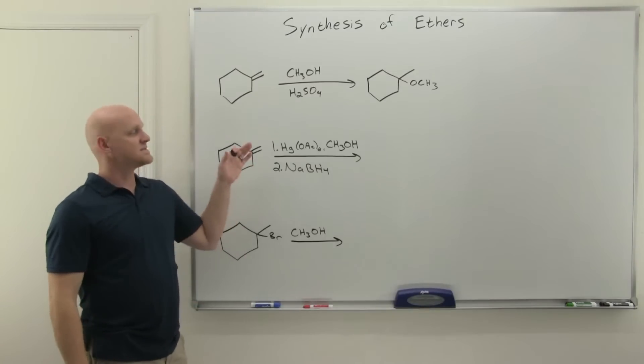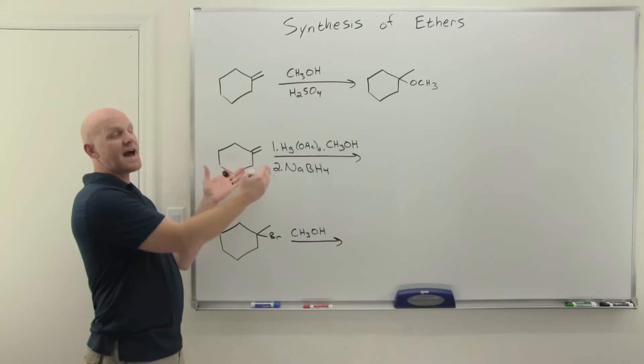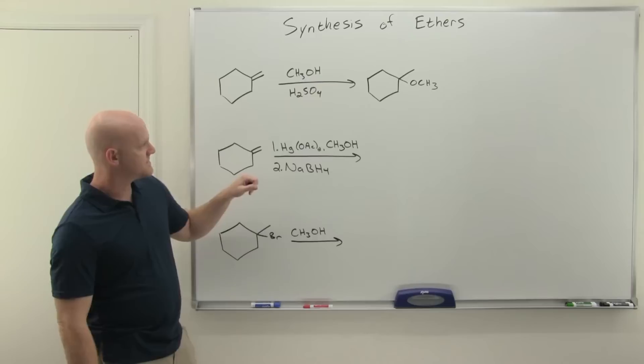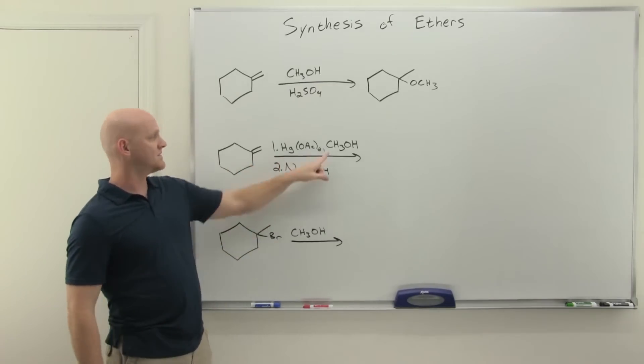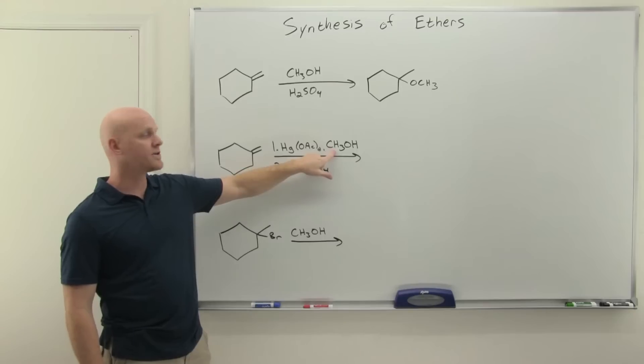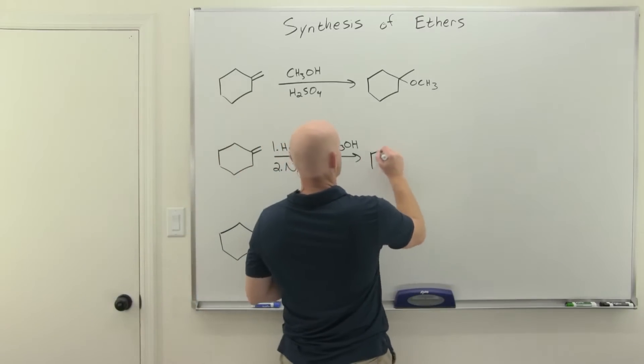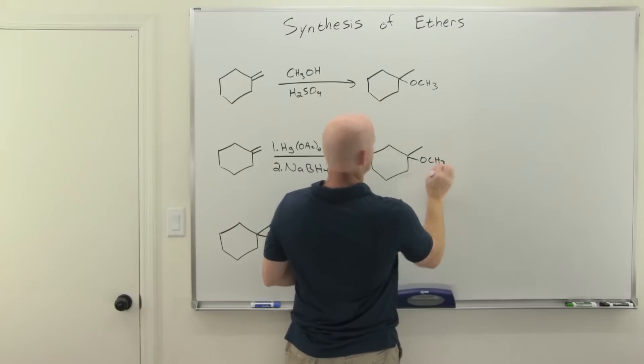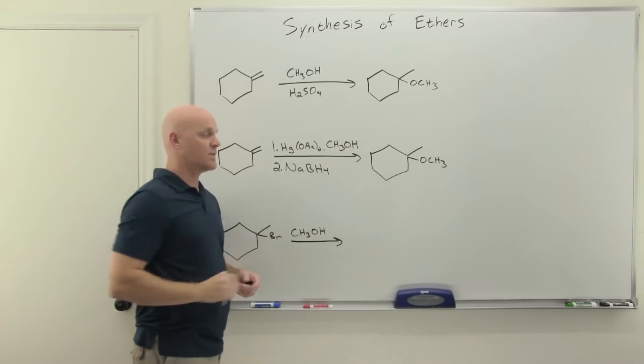Now, it turns out you can get the same result with no carbocation intermediate, no rearrangements to ever worry about, with alkoxymercuration-demercuration. And alkoxymercuration-demercuration, very similar to oxymercuration-demercuration, but instead of, in that first step, using water with mercuric acetate, you're going to use the appropriate alcohol, whatever alcohol you want. In this case, I'm going to use methanol again. And this once again goes Markovnikov, adding an H on the less-substituted side and the OCH3 on the more-substituted side, and once again, we've formed an ether.